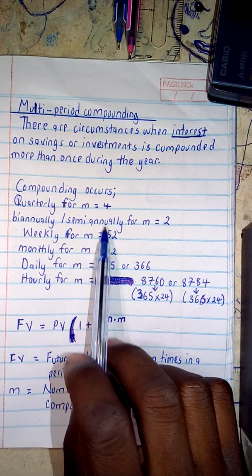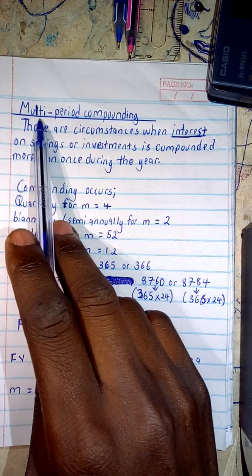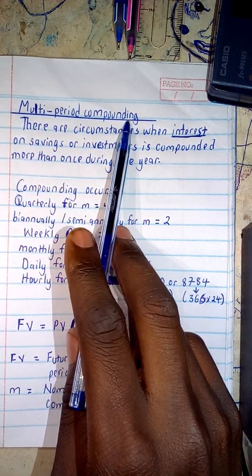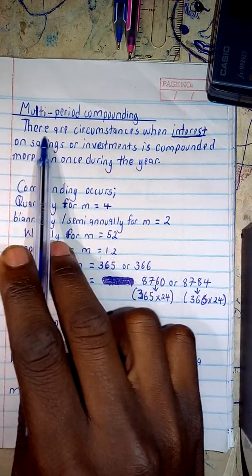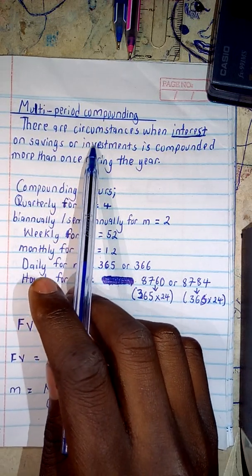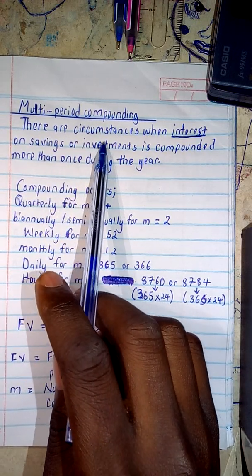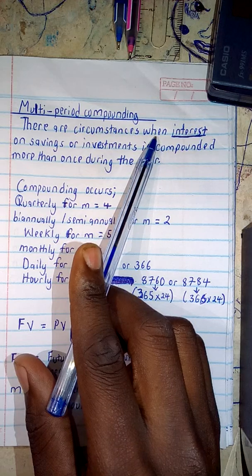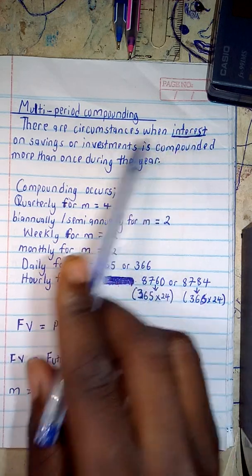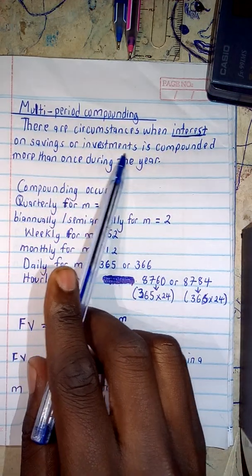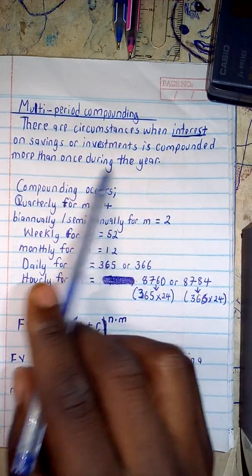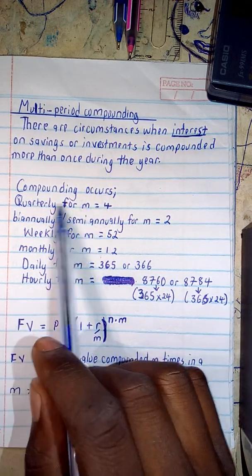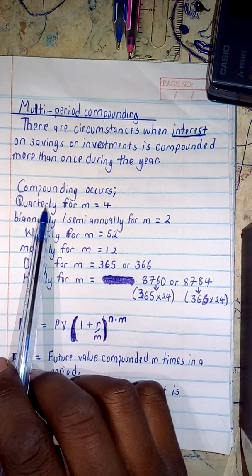With the Time Value of Money, I'm going to begin with multi-period compounding. Multi-period compounding refers to circumstances where interest on savings or investment is compounded more than once during the year.